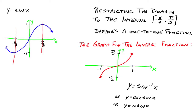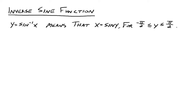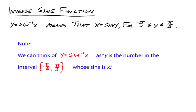The inverse sine function: y equals arc sine of x means that x equals sine y, where y is between negative pi over 2 and pi over 2. We can think of y equals arc sine of x as: y is the number in the interval negative pi over 2 to pi over 2, including the endpoints, whose sine is x. In other words, we're looking for an angle whose sine is x.